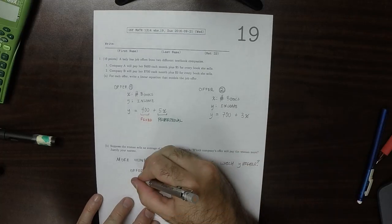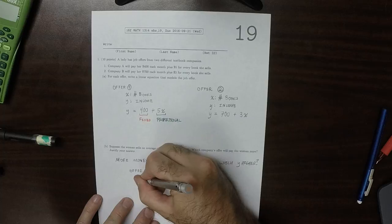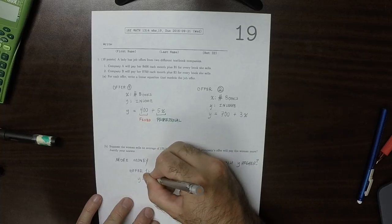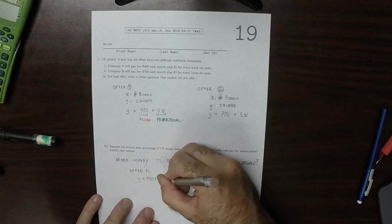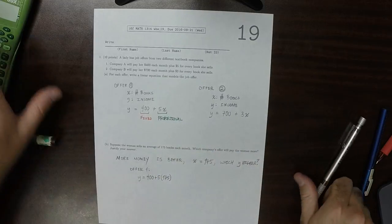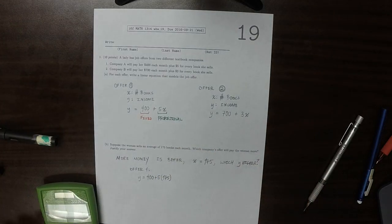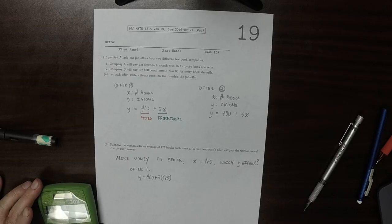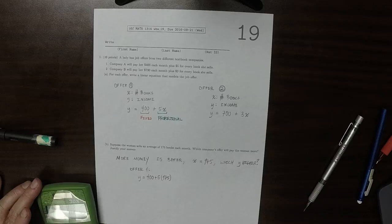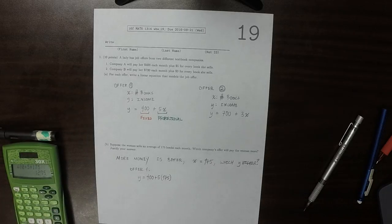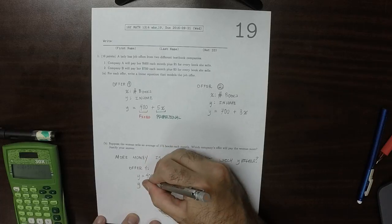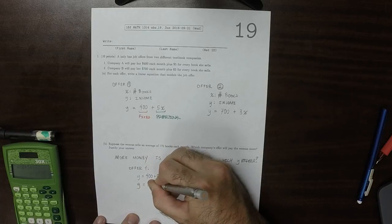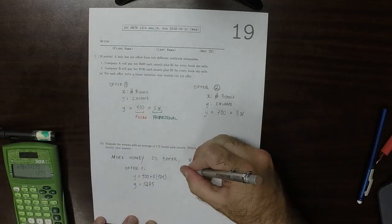So in the case of offer 1, y is 400 plus 5 times 175, which when plugged into a calculator is 1275, whereas offer 2...